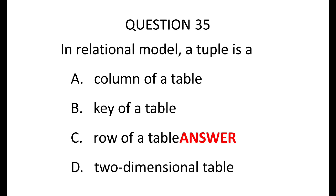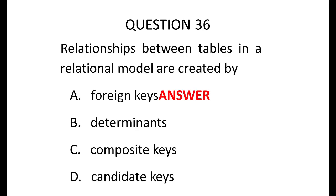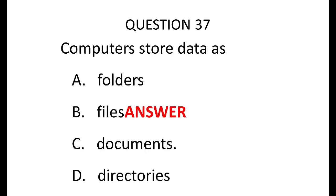Question 35: in the relational model, a tuple is a row of a table — that is the answer. Question 36: relationships between tables in a relational model are created by foreign keys. Determinants are fields that determine the values of other fields. A composite key is when you have more than one field coming together to form a key field, like a primary key but with more than one field forming it. A candidate key can be any key field on the table. The correct answer here is foreign key, because that is the field that creates a relationship with another table.